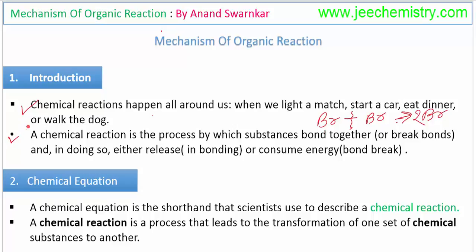In extended chemistry, we define chemical reactions because we need to learn about the mechanism of organic reactions. We are giving the general chemical reaction definition: a chemical reaction is the process by which substances bond together or break bonds.